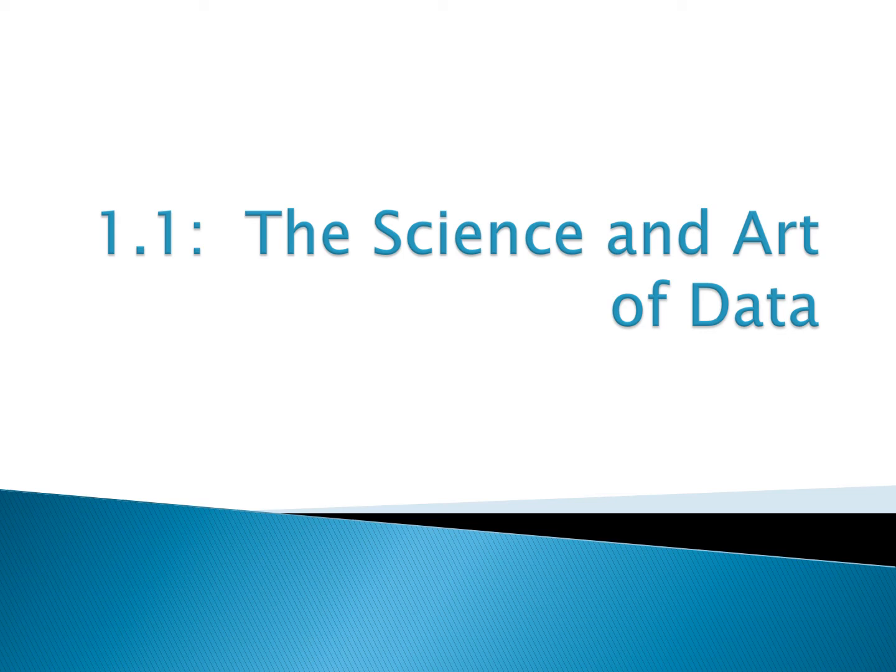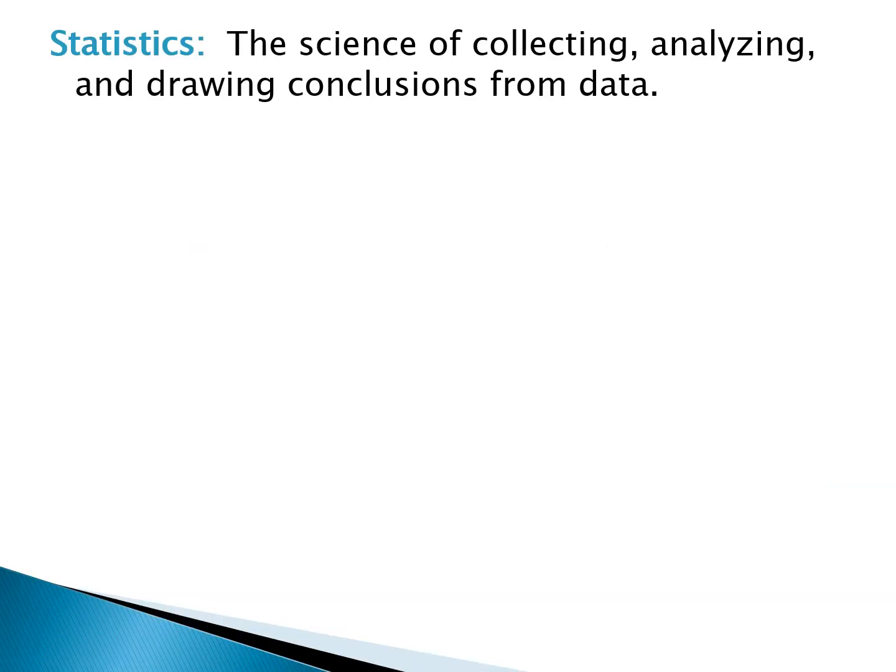Section 1.1: The Science and Art of Data. In this section we're going to cover a lot of the terminology that we'll be using throughout the rest of this chapter and really throughout the rest of the year. To start, let's define what statistics is: it's the science of collecting, analyzing, and drawing conclusions from data. We're either going to be given data or collect it ourselves, apply statistical methods, and ultimately draw conclusions.